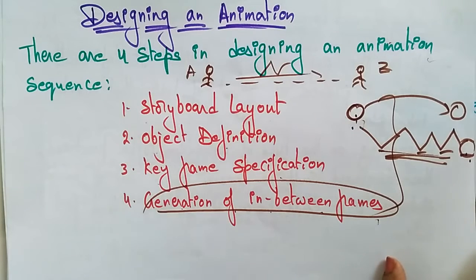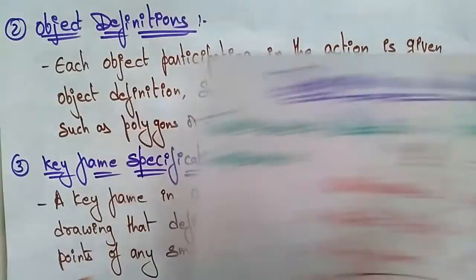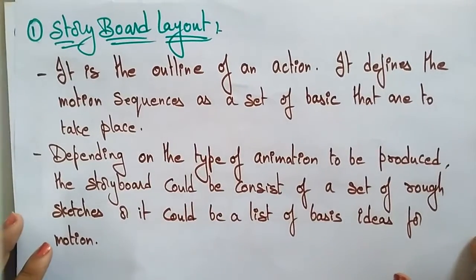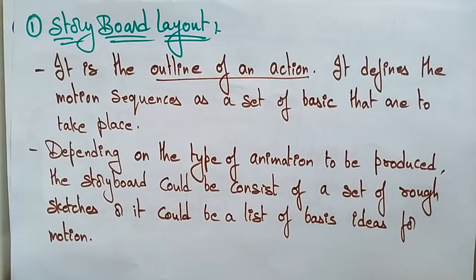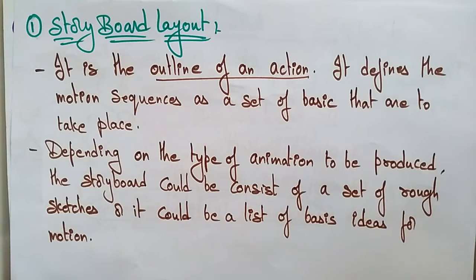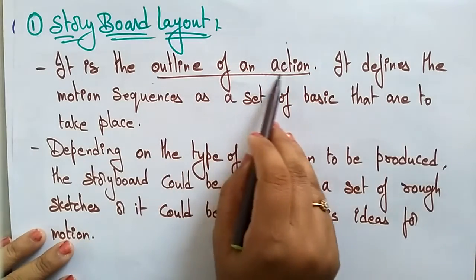To summarize, designing an animation requires these four steps: storyboard layout, object definition, keyframe specification, and generation of in-between frames. The storyboard layout is just an outline of an action — like in software engineering, before developing a product you gather requirements. You imagine the input and the output. That is the storyboard layout: an outline of an action.